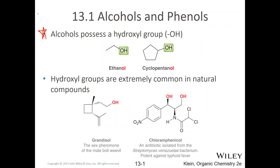Here's a very important salient fact that you have to know: alcohols possess a hydroxyl group. A hydroxyl group, as you can see from context, is an OH. So ethanol is an alcohol because it ends in -ol, and therefore it has a hydroxyl. Cyclopentanol has a hydroxyl. Grandesol has a hydroxyl. Hydroxyl groups are extremely common in nature. Chloramphenicol, which is an antibiotic isolated from a bacteria, actually has two hydroxyl groups. So the first important thing you need to know is that alcohols and phenols have hydroxyl groups.